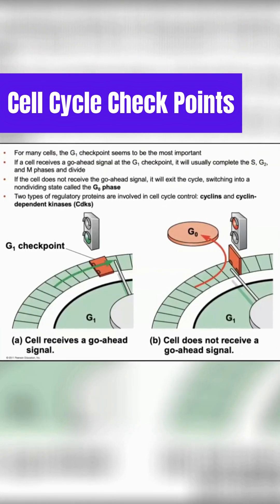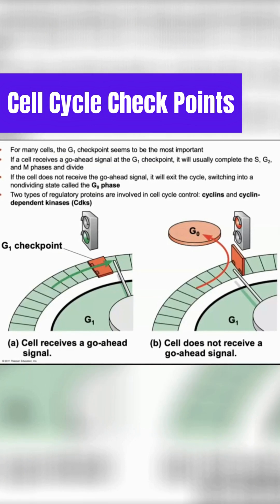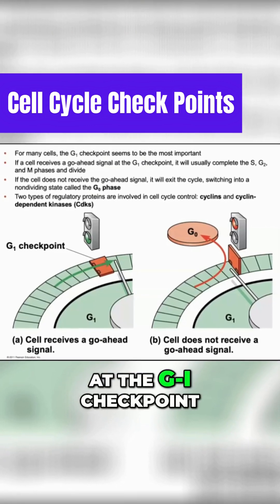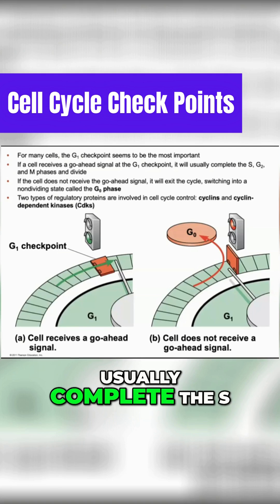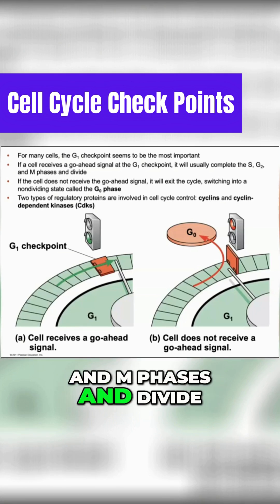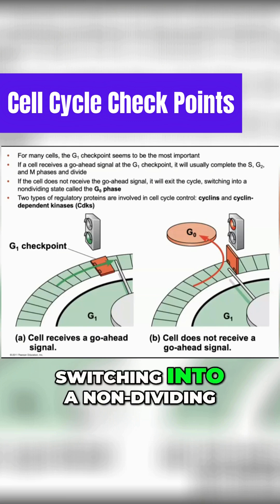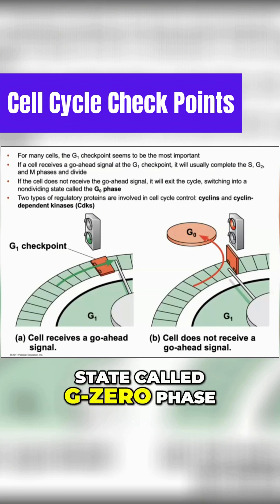For many cells, the G1 checkpoint seems to be the most important. If a cell receives a go-ahead signal at the G1 checkpoint, it will usually complete the S, G2, and M phases and divide. If the cell does not receive the go-ahead signal, it will exit the cell cycle switching into a non-dividing state called G0 phase.